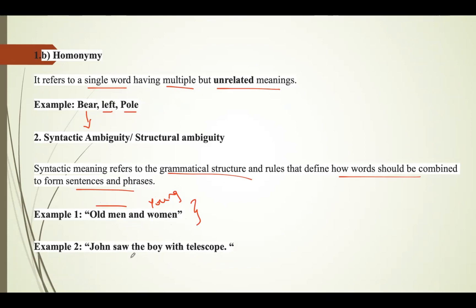Another example of syntactic ambiguity is 'John saw the boy with a telescope.' This has two possible meanings: John saw the boy through the telescope, meaning John is holding the telescope; or John saw the boy who was holding the telescope, meaning the boy is holding it.